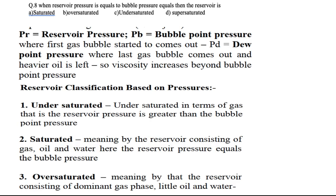Question seven: when the reservoir pressure equals the bubble point pressure, the reservoir is what? Bubble pressure is the pressure in a reservoir rock where the first bubble starts to come out. Dew pressure is where the last bubble comes out through heavier oil. When bubbles come out of oil, there is less volatile material in the hydrocarbon, and viscosity increases beyond the bubble point pressure.